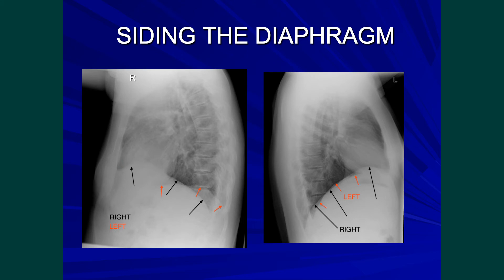This film is slightly rotated. The film on the right again demonstrates the right hemidiaphragm going from back to front without being interrupted by the cardiac silhouette. At this particular point the left hemidiaphragm becomes invisible as the cardiac silhouette sits on the diaphragm.